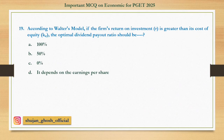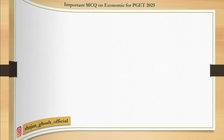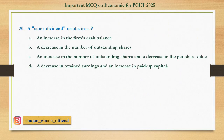Question number nineteen: According to the Walter model, if the firm's return on investment is greater than its cost of capital, the optimal dividend payout ratio should be — option A: 100%. B: 50%. C: 0%. D: it depends on the earnings per share. Answer: zero percent.